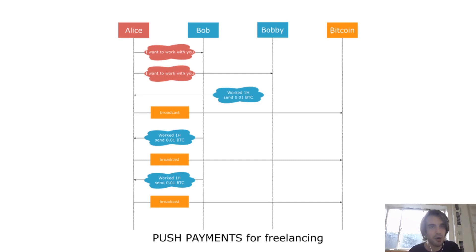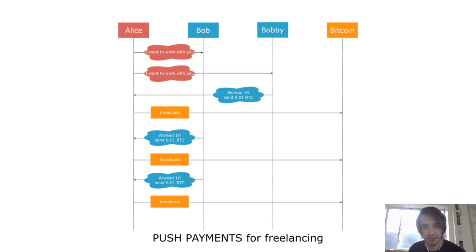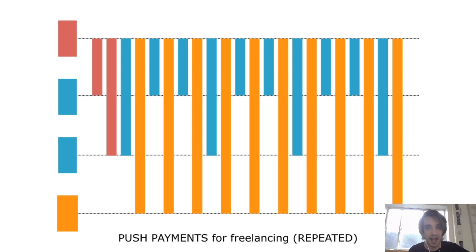Traditionally when you use push payments for paying a freelancer: Bob tells Alice, please can you send me some money at this address? Alice sends the money. Then Bob works a little bit more and asks again — there's always this back and forth between the freelancer Bob and Alice. The more freelancers you have, the more Alice has to keep up with this flow, and every time there's that high mental cost of making one transaction per Bob. Even without talking about transaction costs, you still have this mental cost, and Lightning as-is doesn't solve this issue.